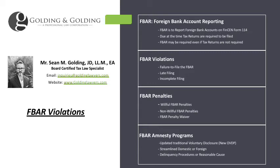When it comes to individuals, there are mainly three categories: U.S. citizens, legal permanent residents, aka green card holders, and foreign nationals such as someone here on a B1, B2, L1, E2, H1B, EB5, O1 visa, etc. If those individuals meet the substantial presence test in any given year, they're considered a U.S. person for that year and they have to file the FBAR.